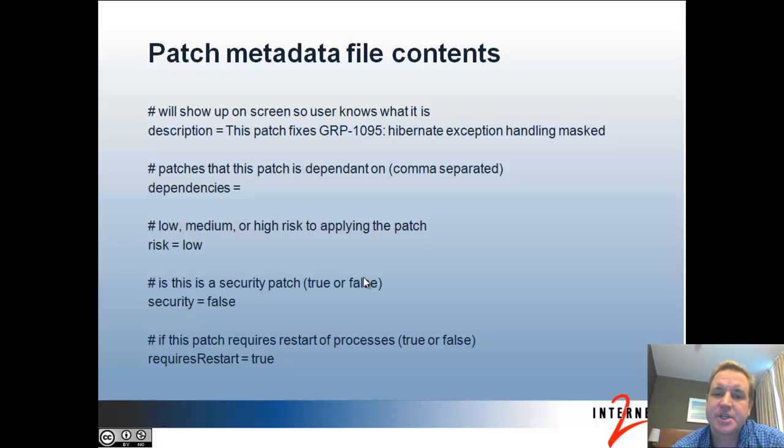The risk level is a key part of the patch — it indicates how many changes the patch is going to make, or how core they are, and the possibility that it could negatively affect other things. So if it's just affecting one JSP on a screen it's probably going to be low. If it's affecting how group math is computed, it would probably be high.